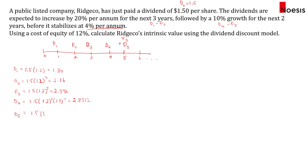For the dividend in year 5, that will be 1.50 × 1.2³ × 1.1² = $3.13632.